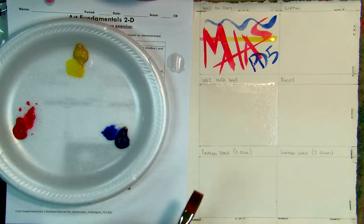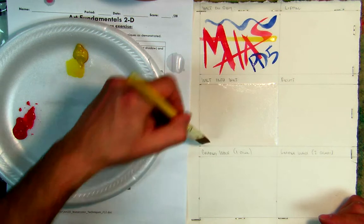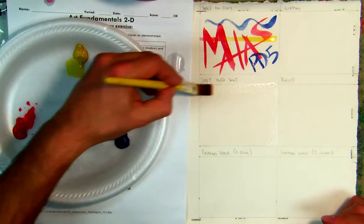Secondly, black tends to flatten it and kill the color. So that's why we don't use black. In the nature of these are to be transparent.